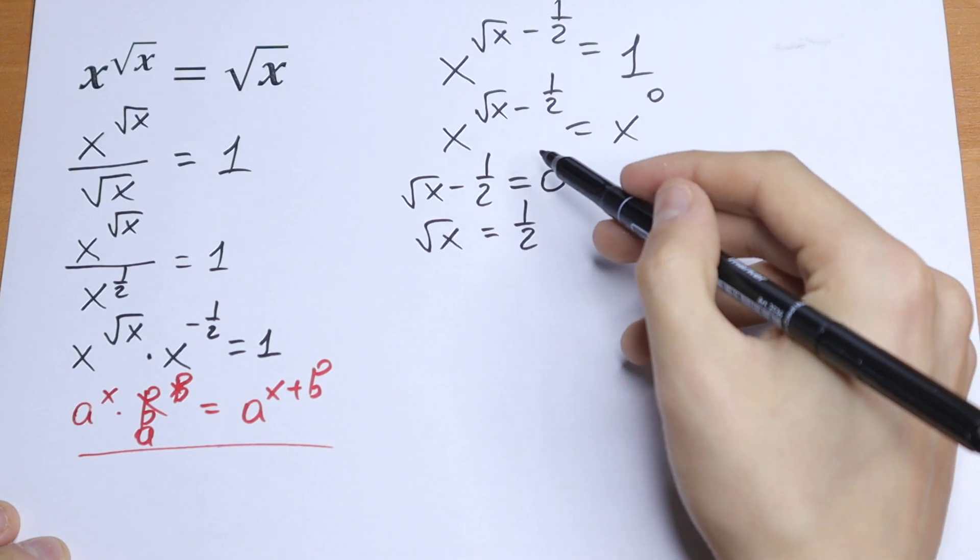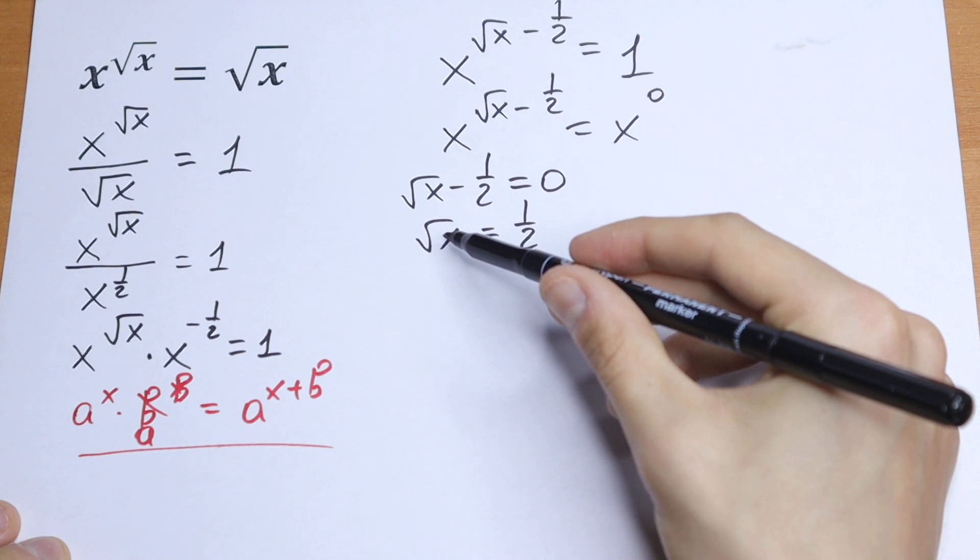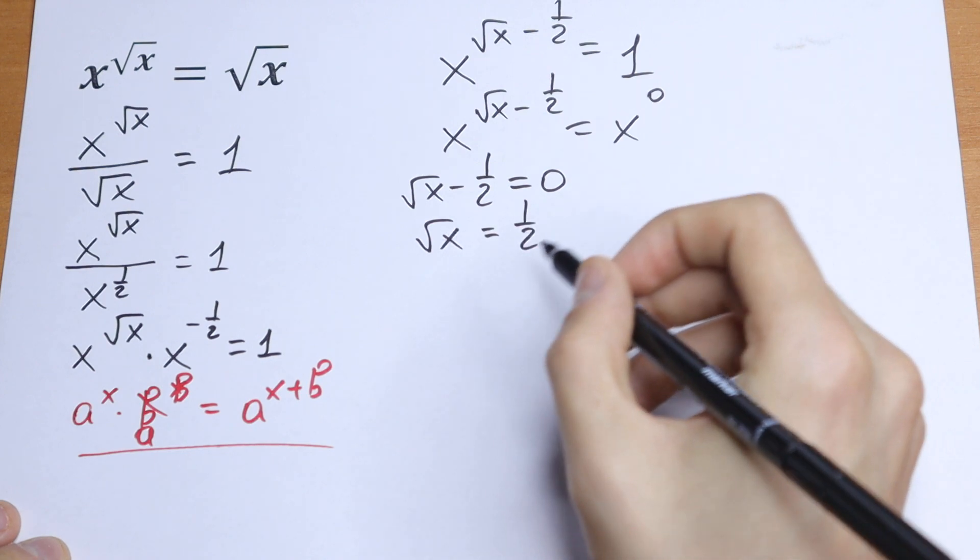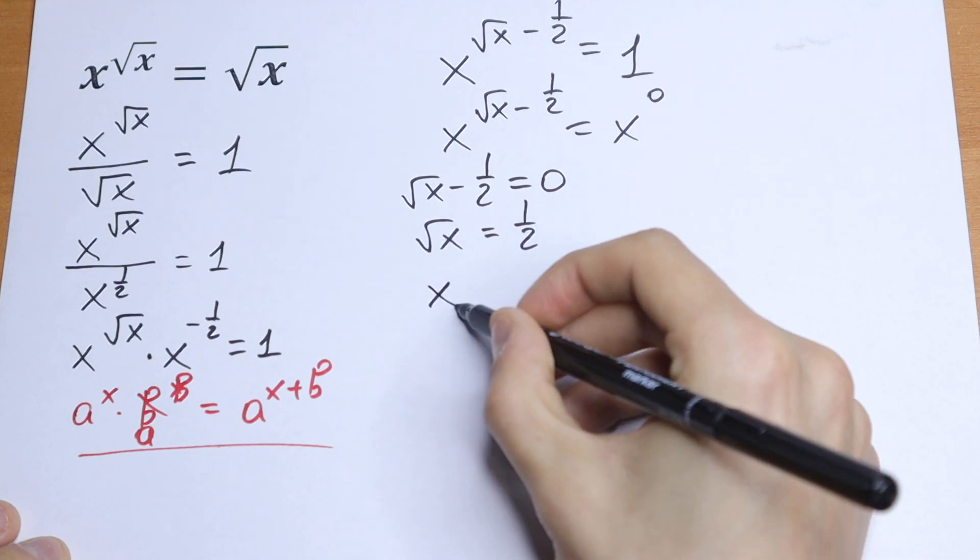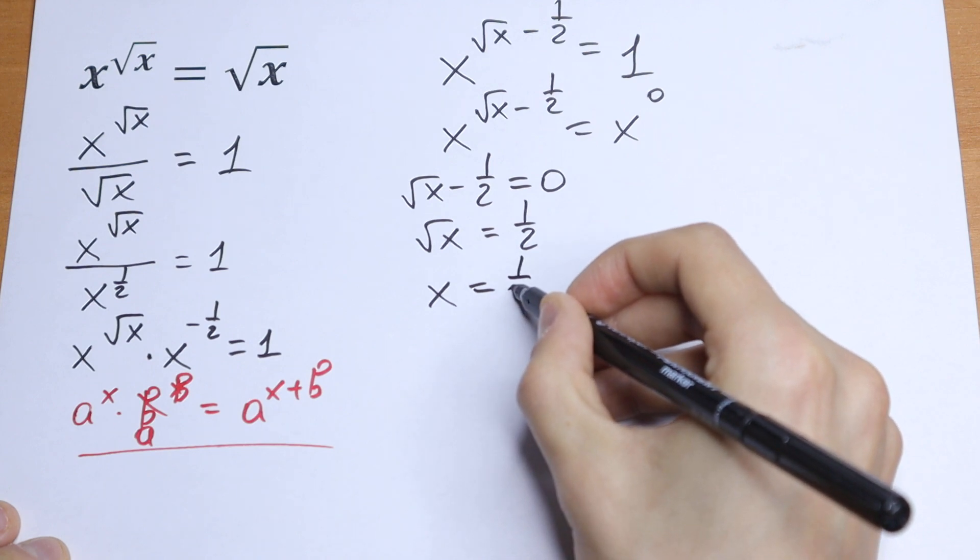Bring this minus one-half to the right and raise both sides to the second power. We will have x on the left and one over four on the right.